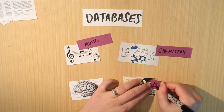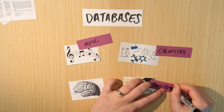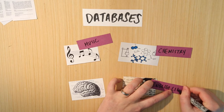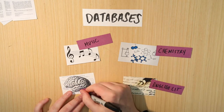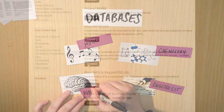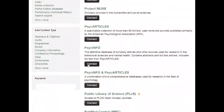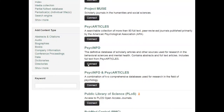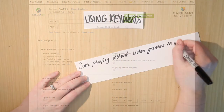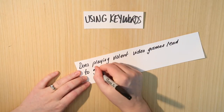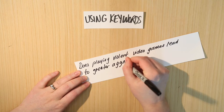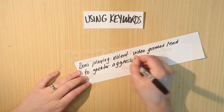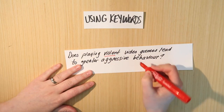We talked about how databases are organized by subject area, and how the database for psychology that we have in the library is called Psych Info. After that, we broke down our research question into its main concepts. The sample question we used was: does playing violent video games lead to greater aggressive behavior?